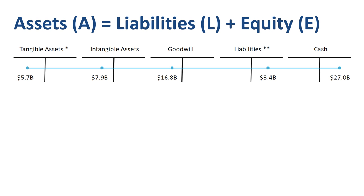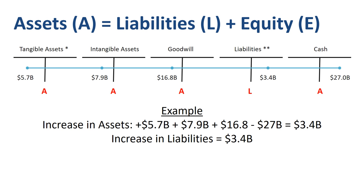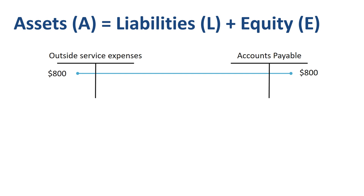Let's check that for the acquisition journal entry that we saw before. We first classify the accounts as assets or liabilities. There are four asset accounts and one liability account involved in this journal entry. The increase in the asset accounts is $5.7 billion debit plus $7.9 billion debit plus $16.8 billion debit minus $27 billion credit, which equals $3.4 billion. The increase in the liability account is also $3.4 billion, so this journal entry complies with the accounting equation: assets equals liabilities plus equity.